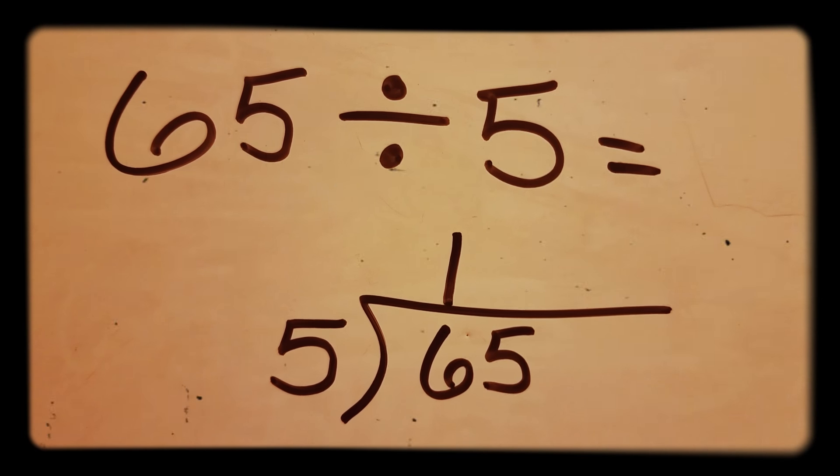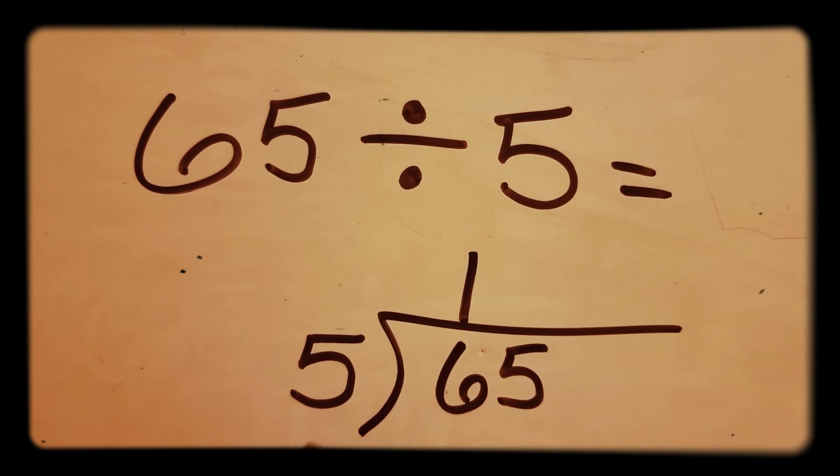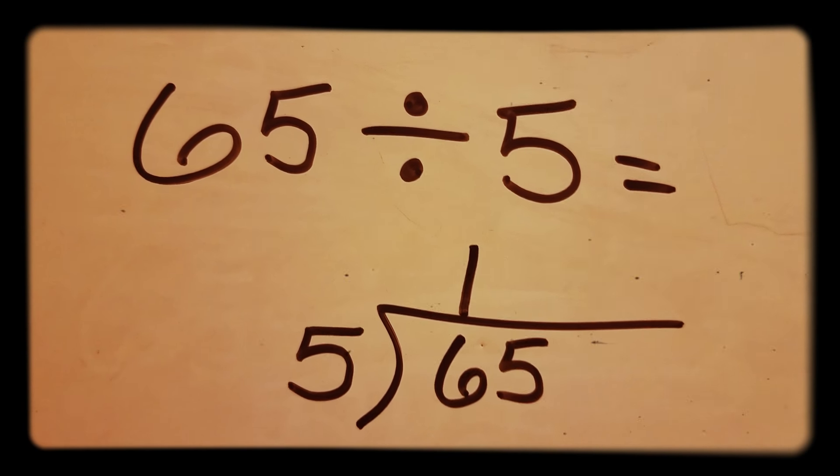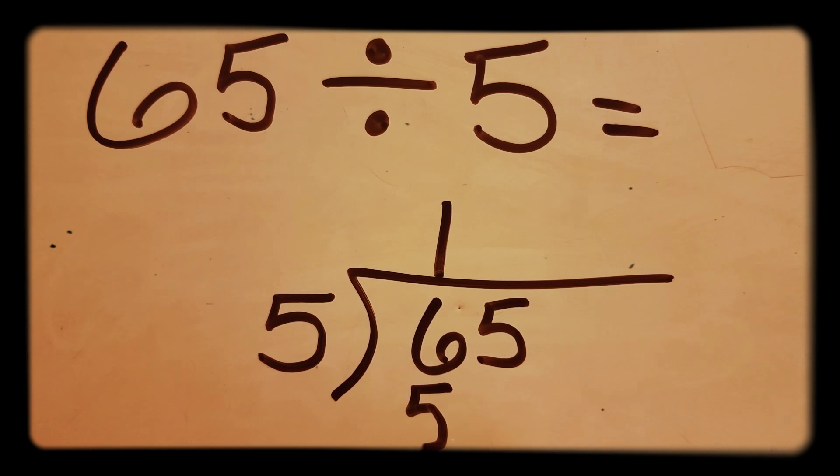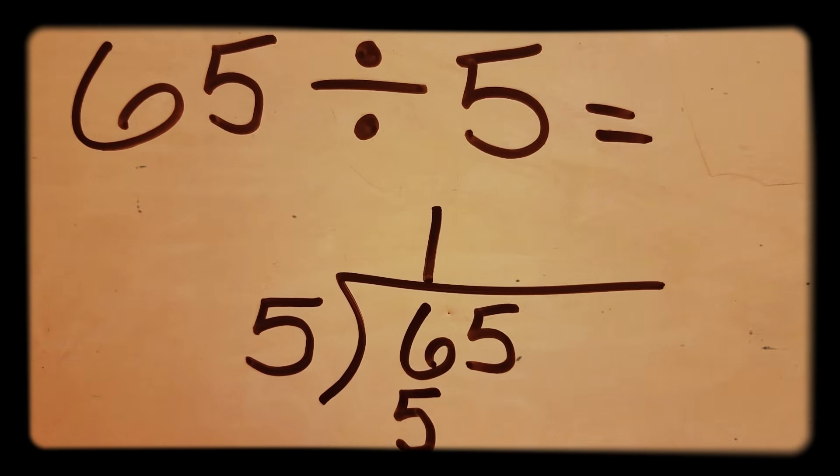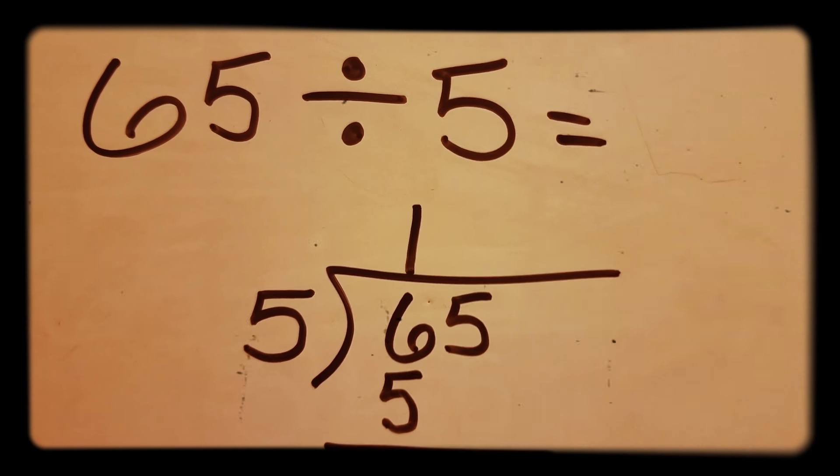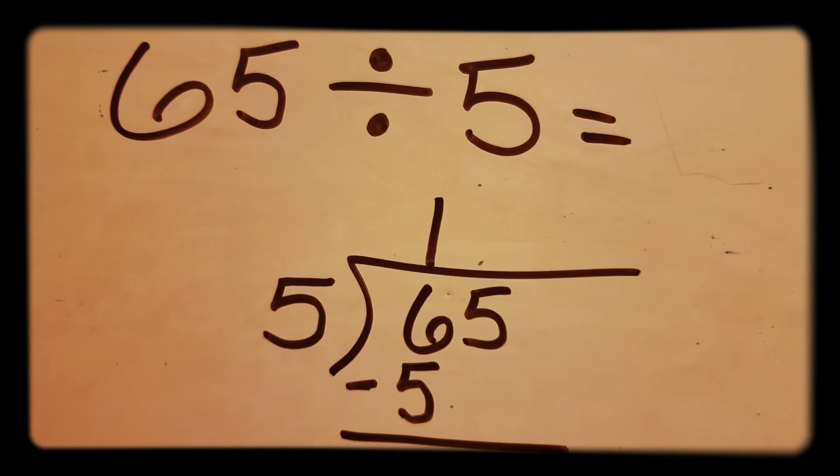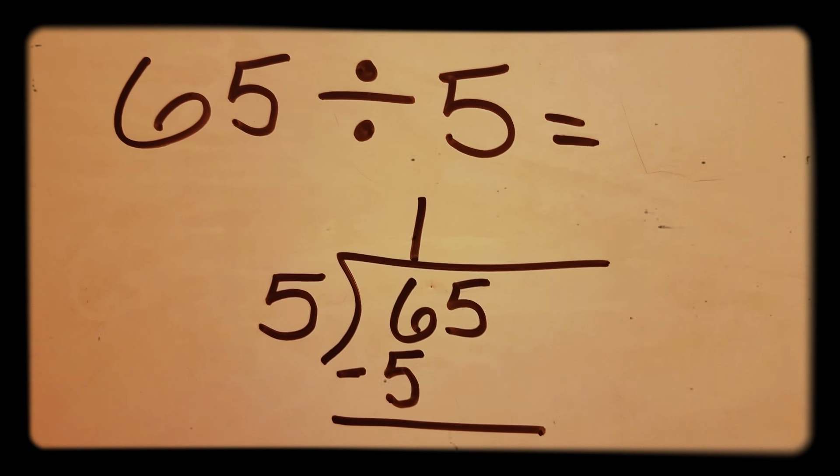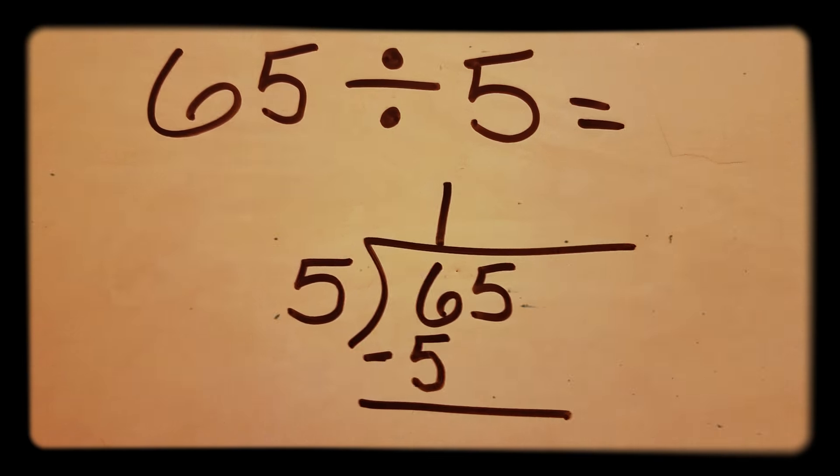Next you multiply: 5 times 1 is 5, and you put it directly under the 6. Next step is subtraction. 6 minus 5 is 1.